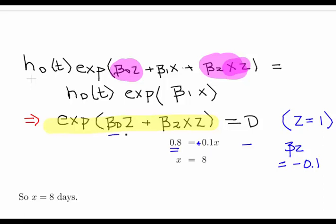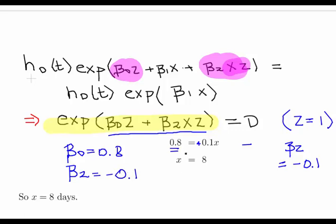Rearranging: with beta zero equal to 0.8, we get 0.8 = 0.1 times X, where X is the number of days. So clearly X equals 8 days.